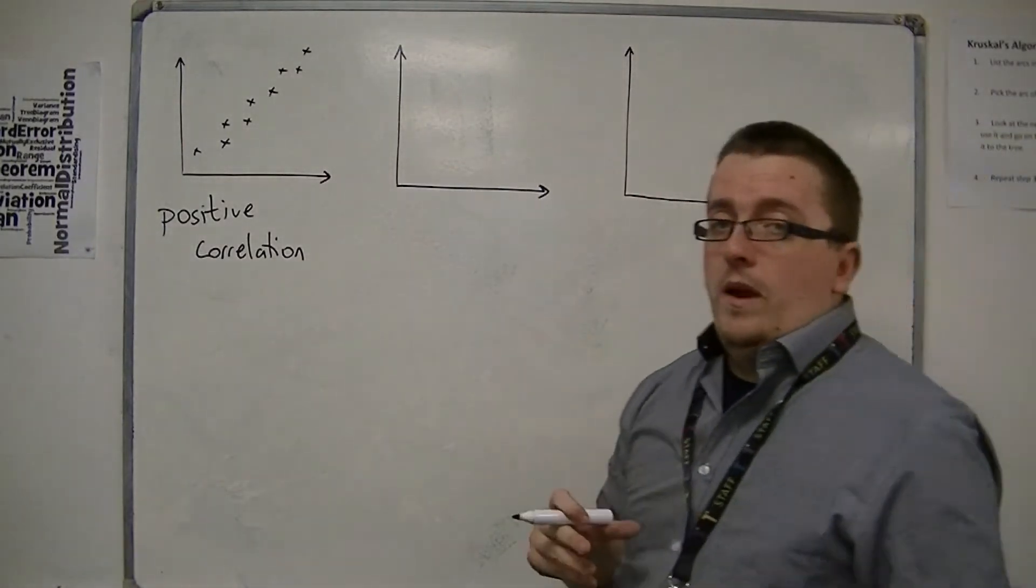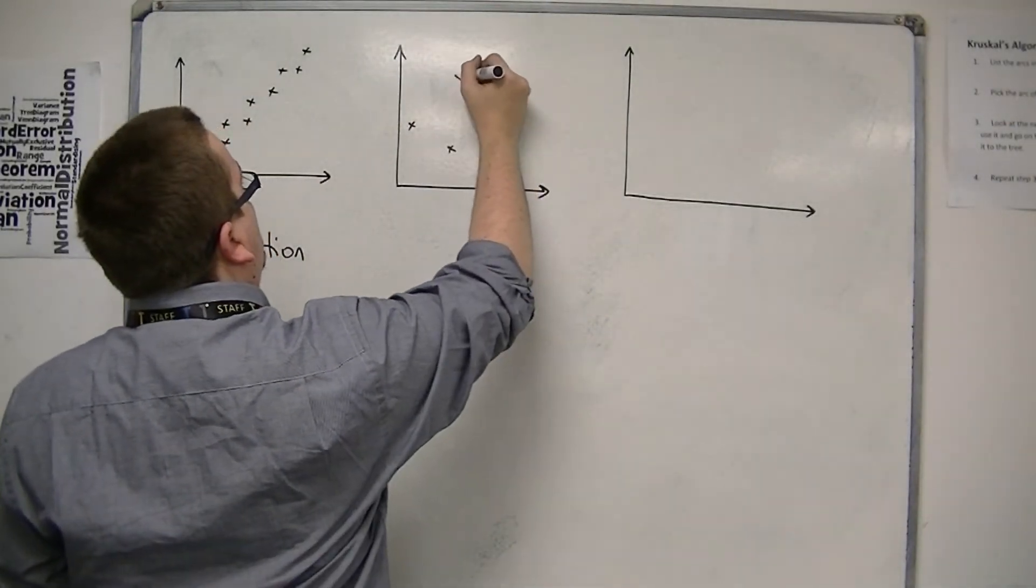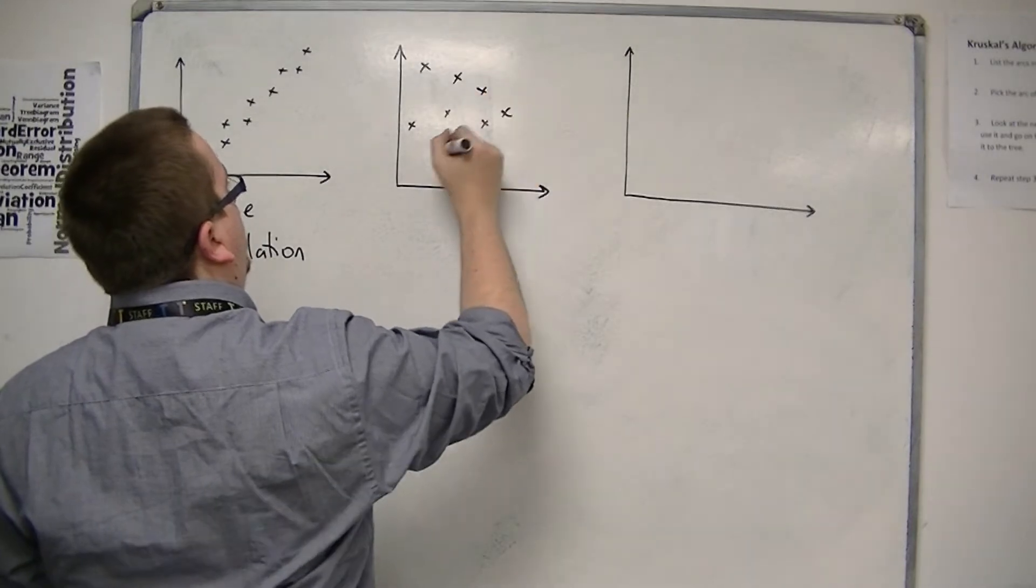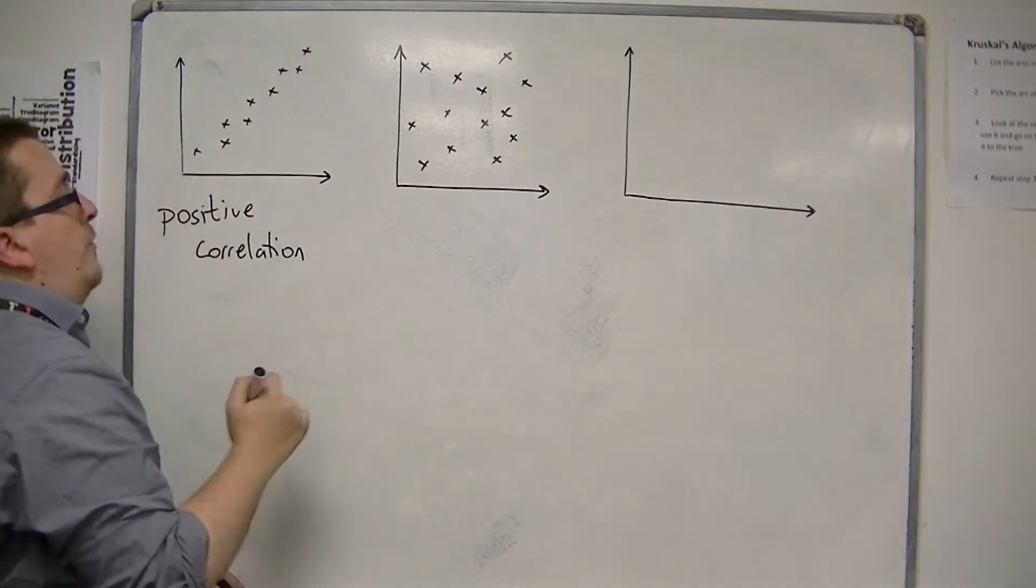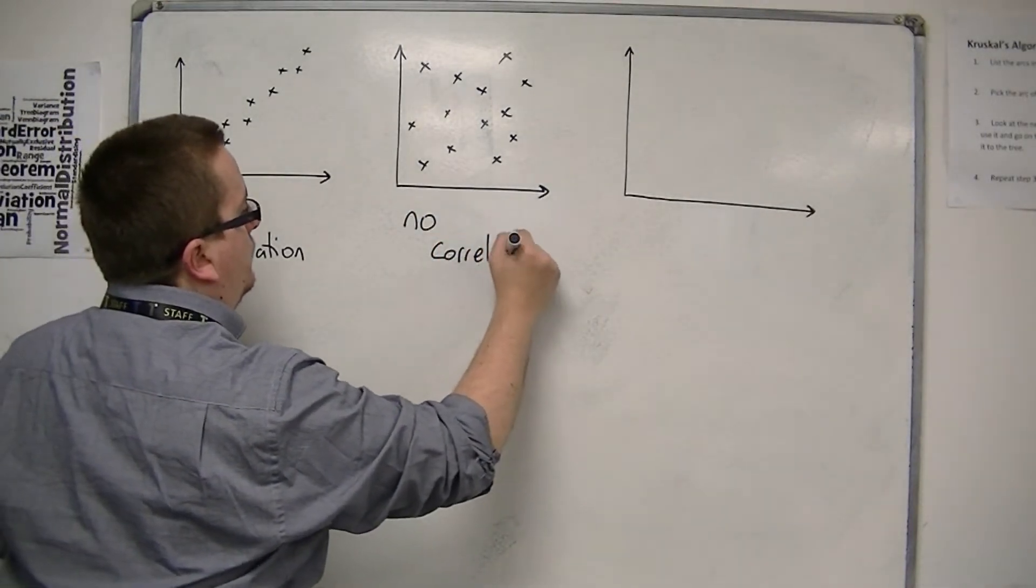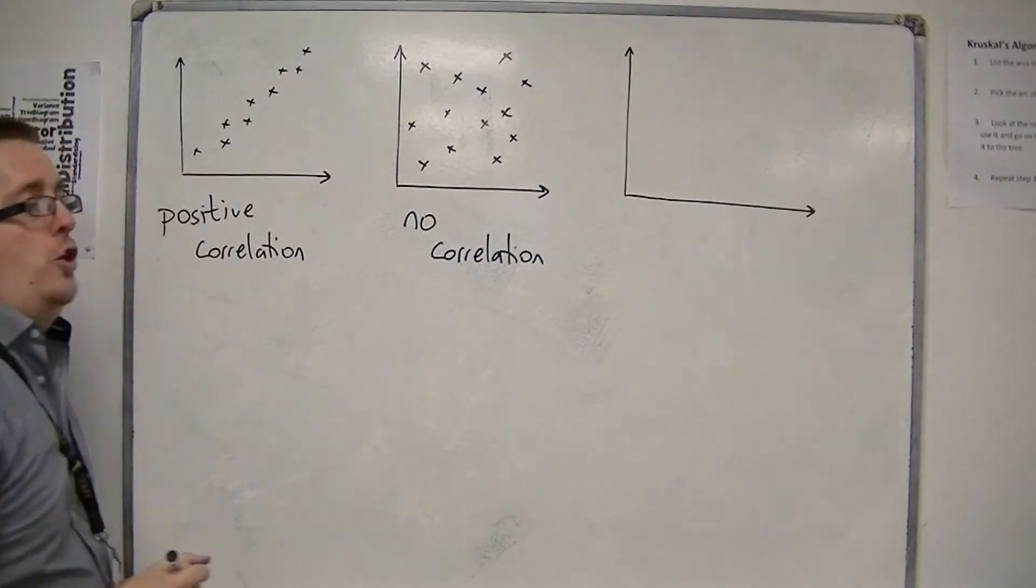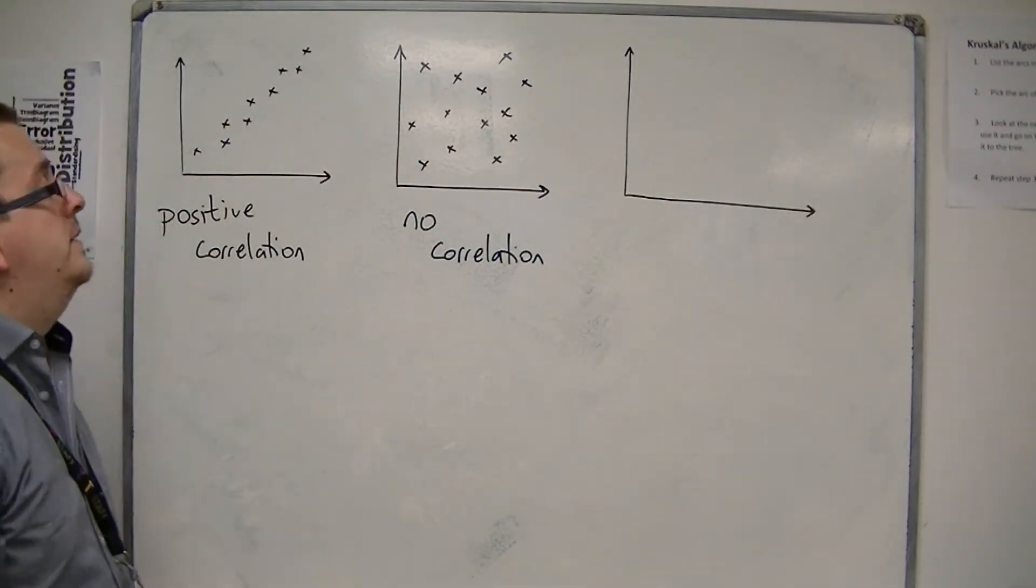If, however, you find that the points when drawn are all over the place, then we can refer to this as no correlation. There doesn't seem to be any correlation or connection between the two items that we're looking at, the two measurements.